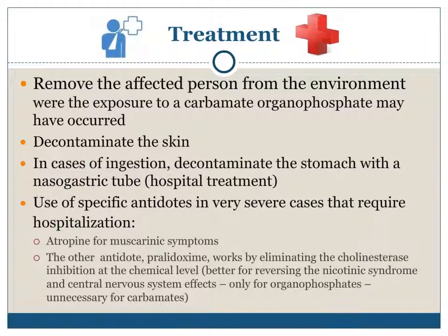Treatment. Remove the affected person from the environment where exposure to a carbamate or organophosphate may have occurred. Decontaminate the skin. In case of ingestion, decontaminate the stomach with a nasogastric tube. Hospital treatment involves the use of specific antidotes in very severe cases: atropine for muscarinic symptoms, and the other antidote, pralidoxime, which works by eliminating the cholinesterase inhibition at the chemical level.